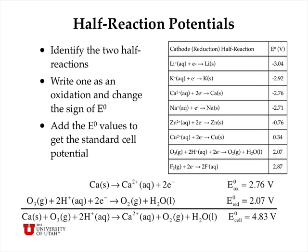If we look at half-reaction potentials, we can look up in tables two half-reactions that together add up to an overall redox reaction of interest. In this case, I have calcium metal, which is being oxidized to calcium ions, and I have ozone, which is being reduced to oxygen and water. From my table, I can look up the reduction potential of calcium ions to calcium metal, but I actually have to turn this around to write it as an oxidation.